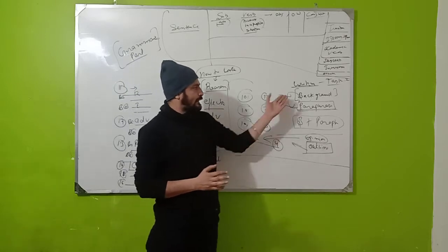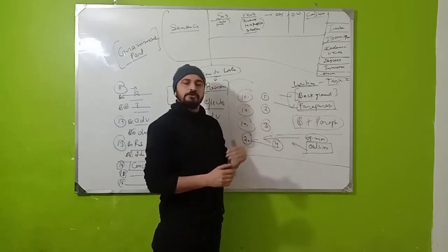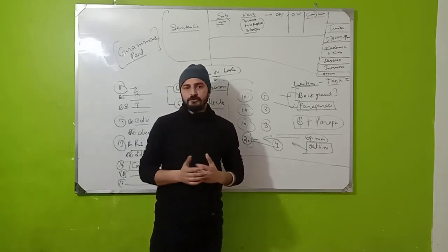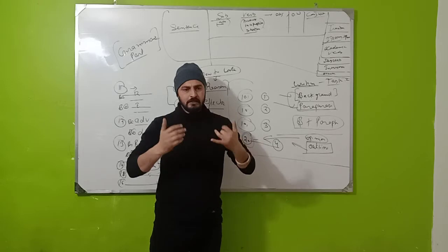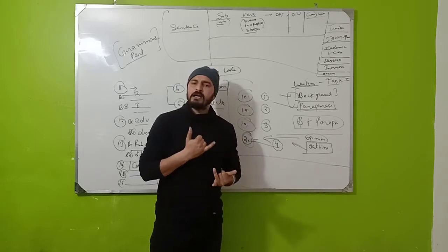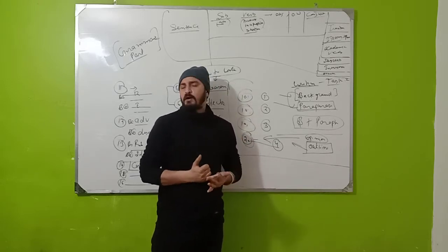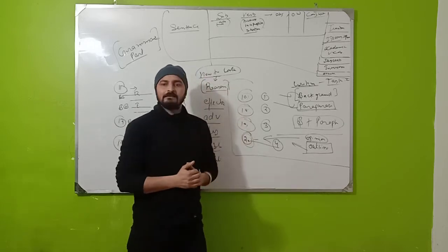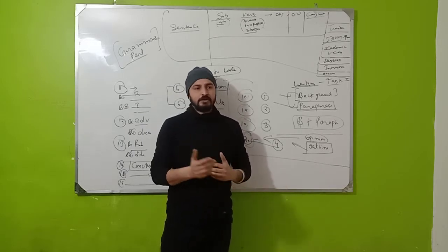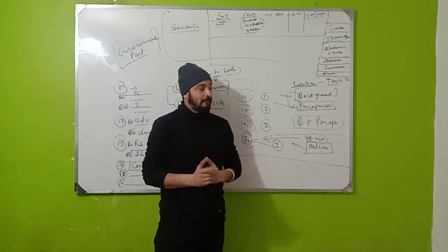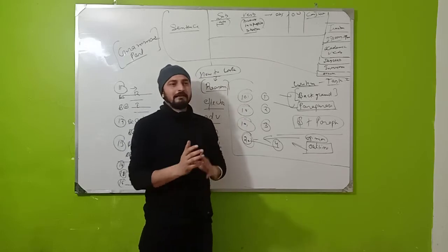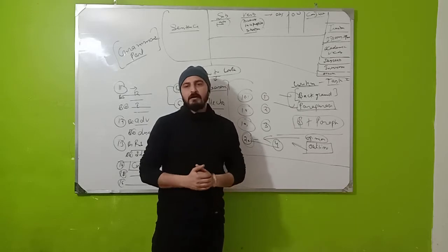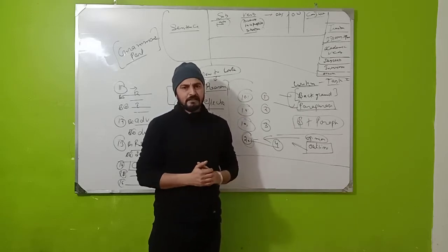The first thing is that in writing task two, you need to write the backdrop of a statement. For any new topic they have given to you, they may be talking about reasons, solutions, disadvantages, or maybe a fact of anything, and they will ask you to elaborate on it and discuss that particular topic. The background must be clear in your mind before starting the writing task.